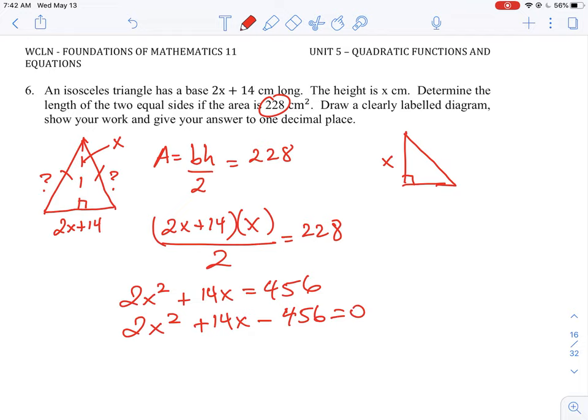We know the height of this triangle is going to be x, because that is the value it tells us in the question. We also know the base of that right angle triangle is going to be one half of the 2x plus 14, the total base. So that means this is 2x plus 14, but we divide it all by two, which is going to give us x plus 7.